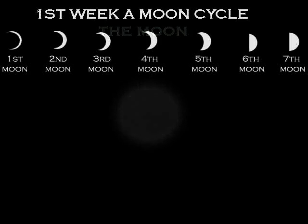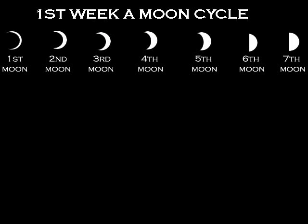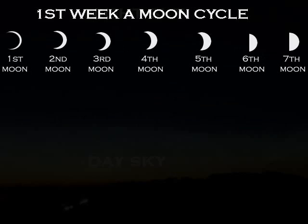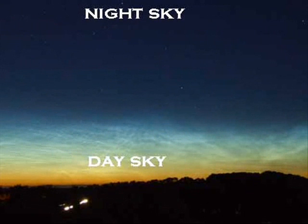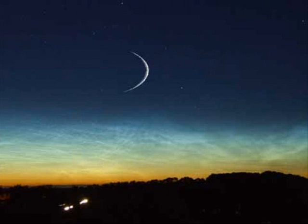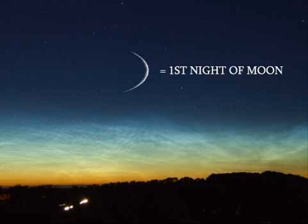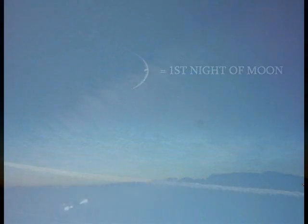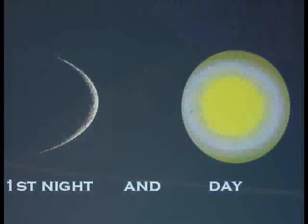Now we're going to start with the first seven nights and days of a moon cycle. To really understand the moon cycle you would have to observe the moon nightly. The first night of a new month is proven by observing the going down of the sun at the evening. When the sun goes below the horizon, the crescent moon will be seen in the western sky where the sun is setting, and this crescent moon signifies the first night of the moon, or month.